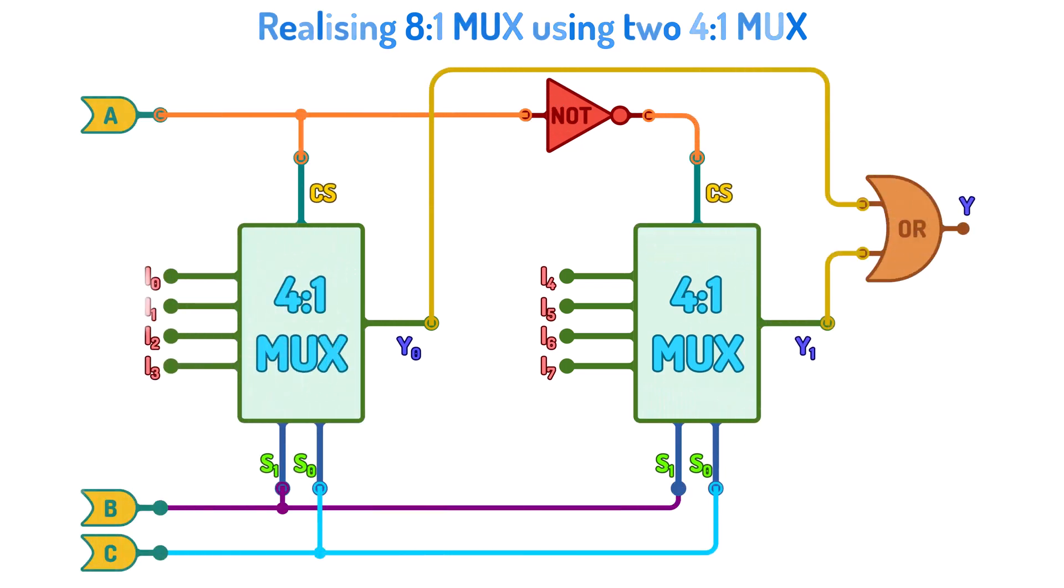To realize an 8-to-1 multiplexer using two 4-to-1 multiplexers, connect the components in the following configuration. Here we can see three selector lines A, B, and C. B and C are connected to S1 and S0 of both the multiplexer. A is connected to the CS pin of both the multiplexer.